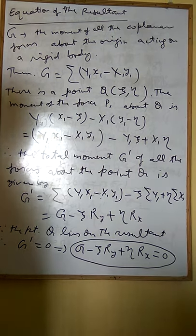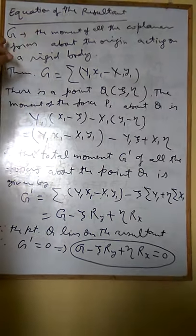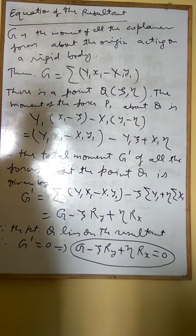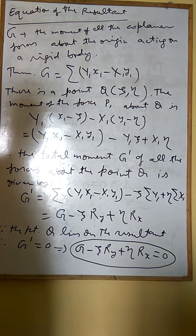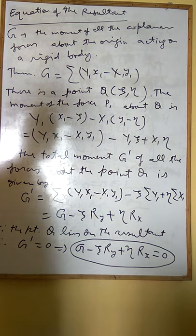Now there is another result: the equation of the resultant. Here we have G, which is the moment of all the coplanar forces about the origin acting on a rigid body. The rigid body is experiencing forces P₁, P₂, P₃, etc.